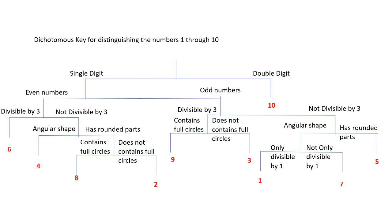I went for the angular versus rounded parts, and then the last one I struggled a little bit because 1 and 7 are both prime numbers. I could have gone with prime numbers earlier, so that instead of going with the divisible by 3, that was one of the things I considered. But I figured it was going to be difficult to get the prime numbers, then separate it out. But the last two, only divisible by 1 and only not only divisible by 1, gave me the last ones.